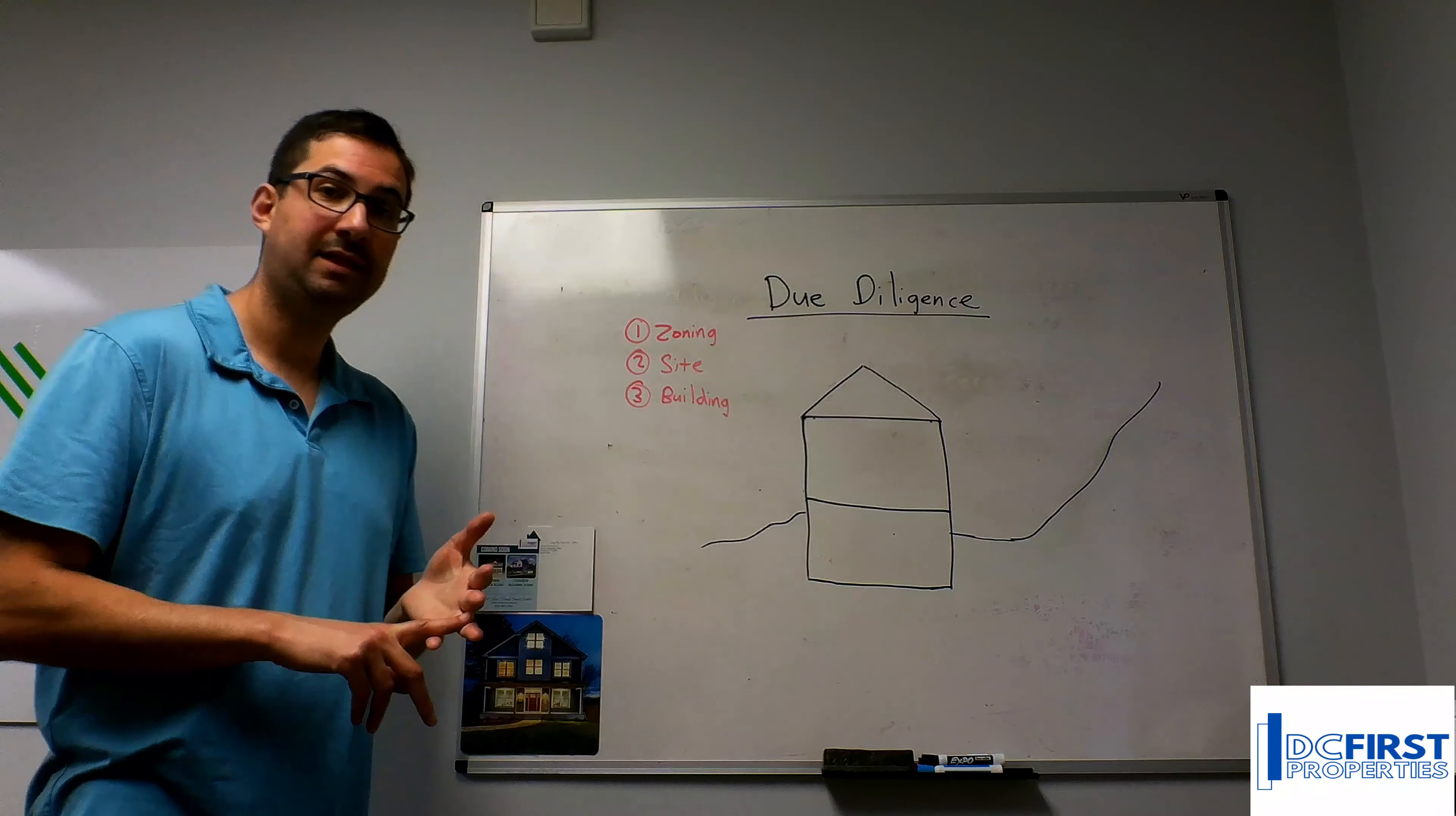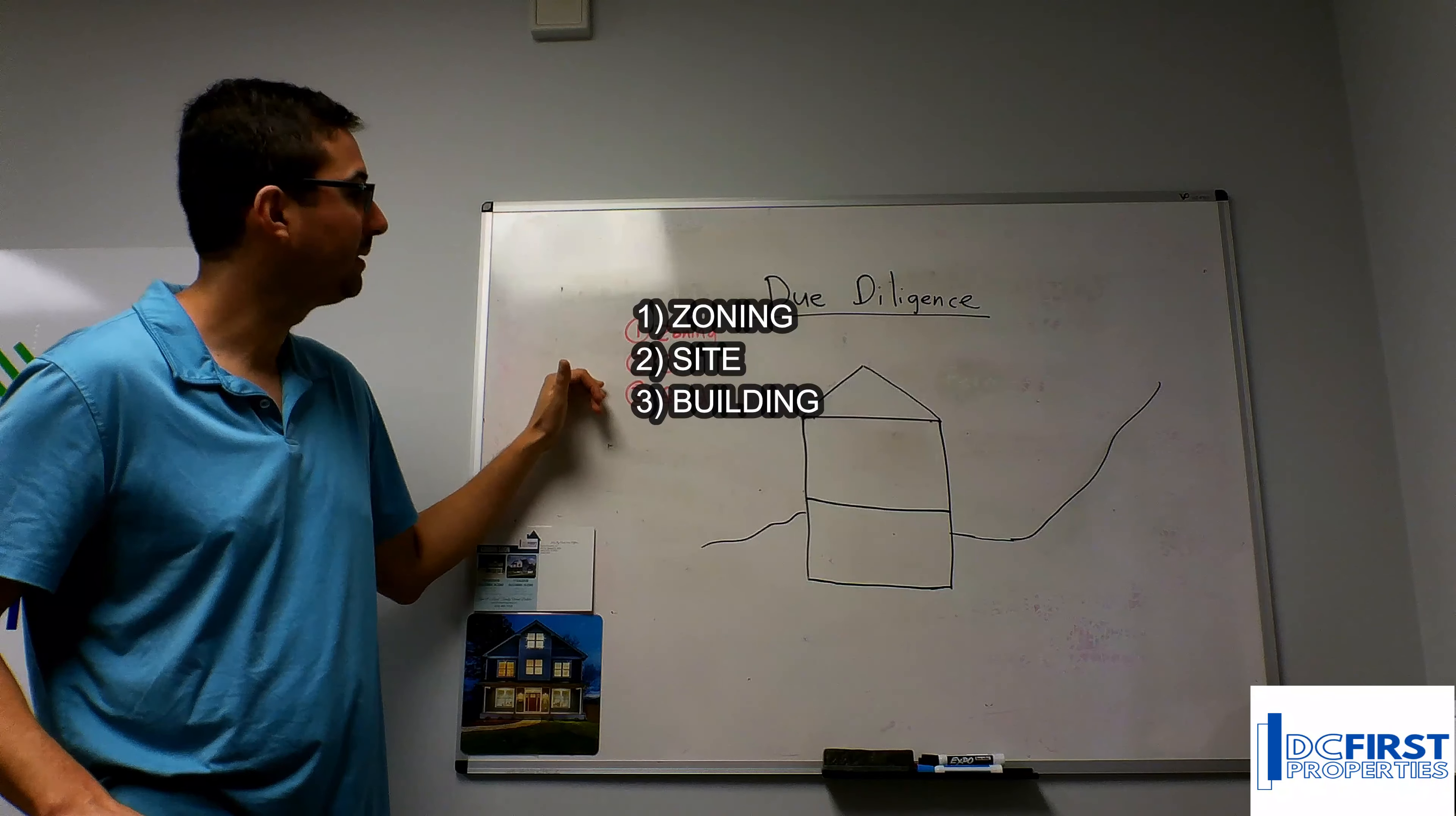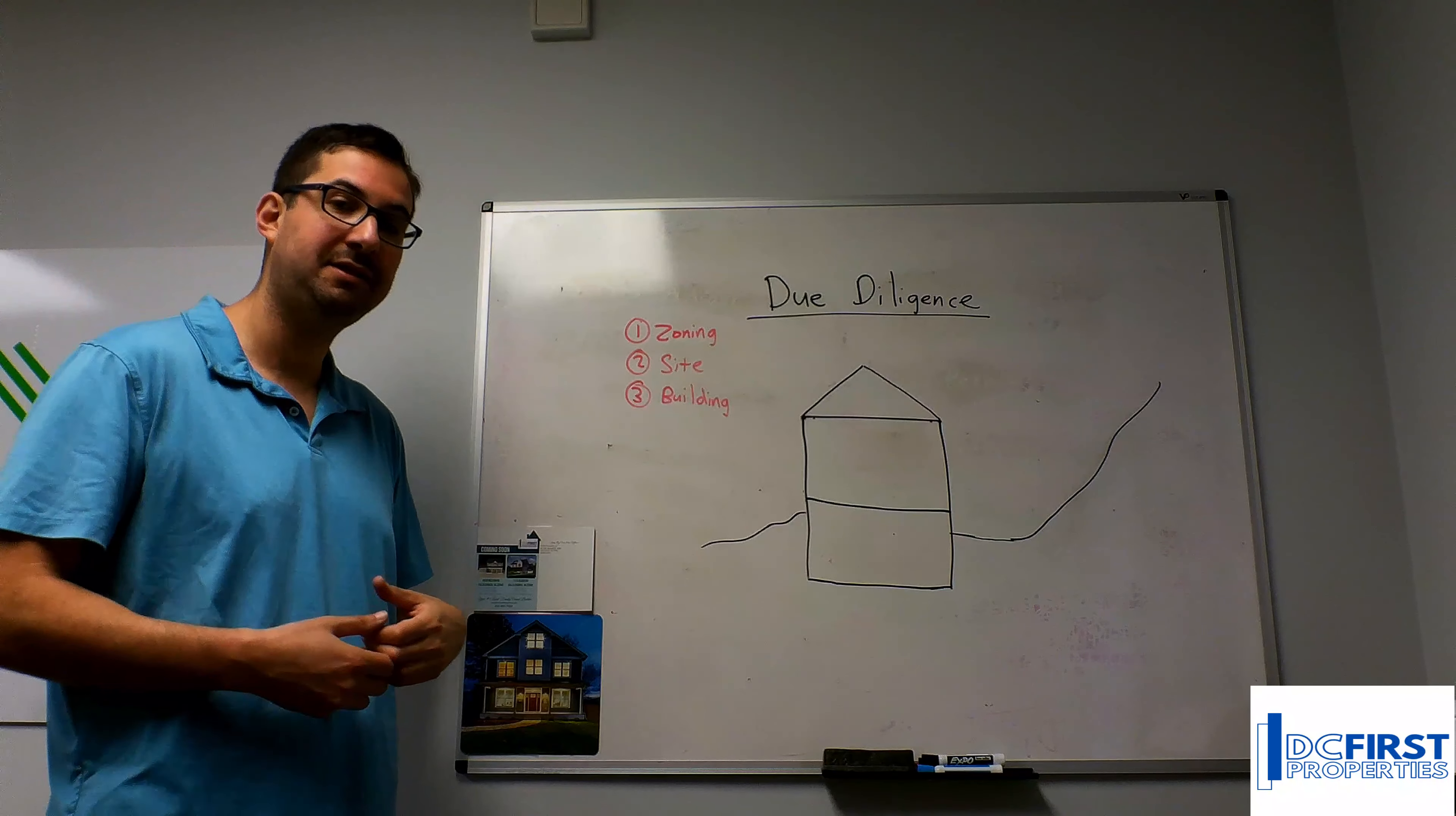The three basic steps of due diligence are: check the zoning, check the site, and check the building. All these will be done with affiliation to the local jurisdiction. You'll be looking at documentation in your local county or city office.